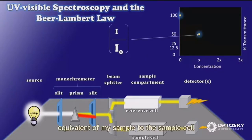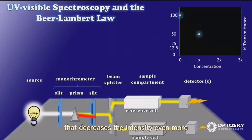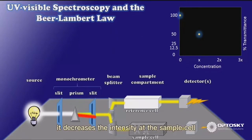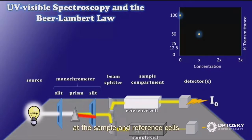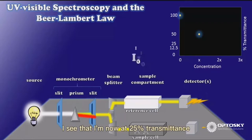If I add another equivalent of my sample to the sample cell, that decreases the intensity even more. Not only that, it decreases the intensity at the sample cell by a known amount, exactly one half for each equivalent of sample that I add. So when I compare my new intensities at the sample and reference cells, I see that I'm now at 25% transmittance.